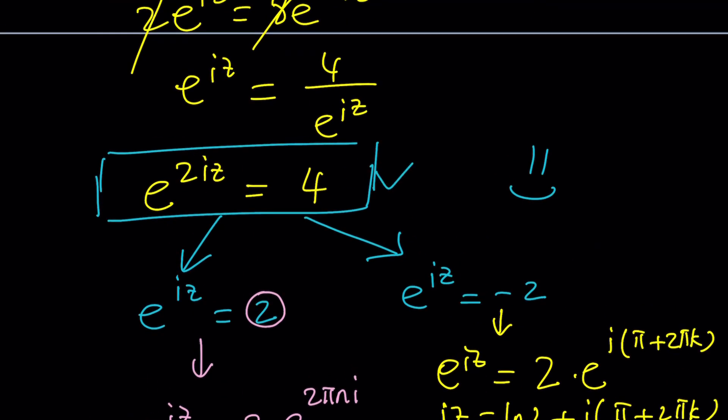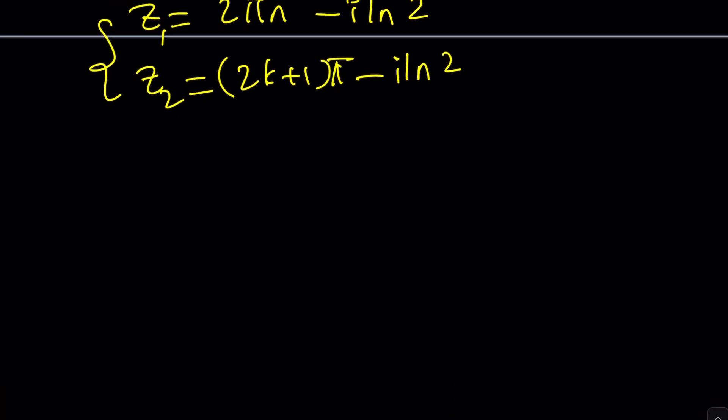If you just stick to this, e to the 2iz equals 4. Proceeding this way is kind of easier because you can go ahead and kind of multiply by e to the power 2 pi mi again.